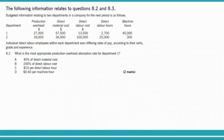Now the next question — this data covers questions 8.2 and 8.3. Reading the requirement first: what is the most appropriate production overhead absorption rate for department one? We have production overheads, direct material, direct labor hours, and machine hours. The question asks for the most appropriate OAR for department one.